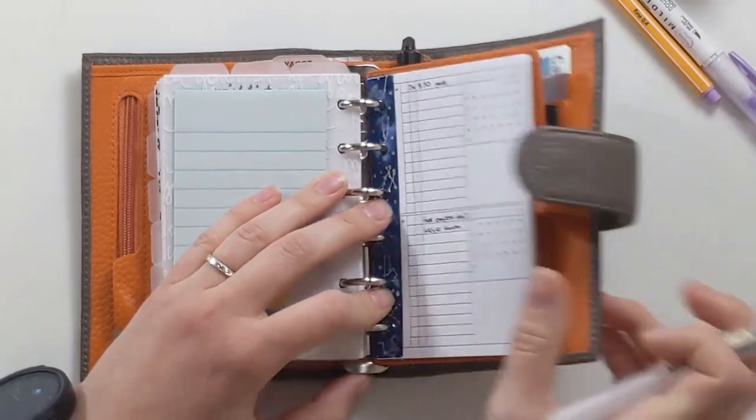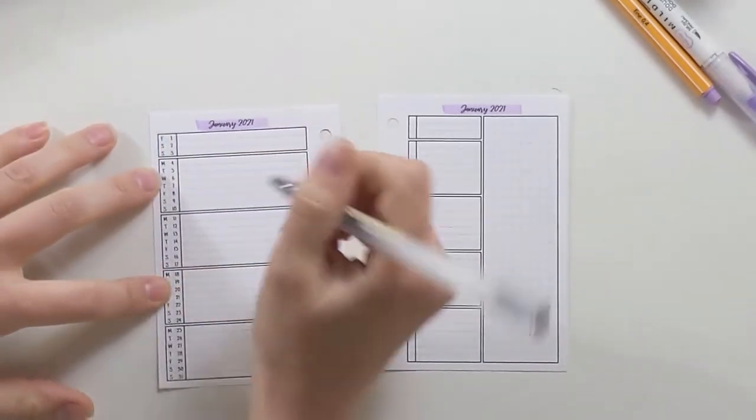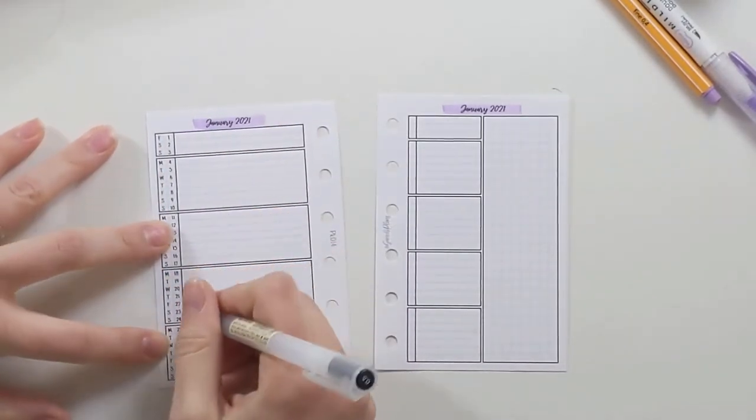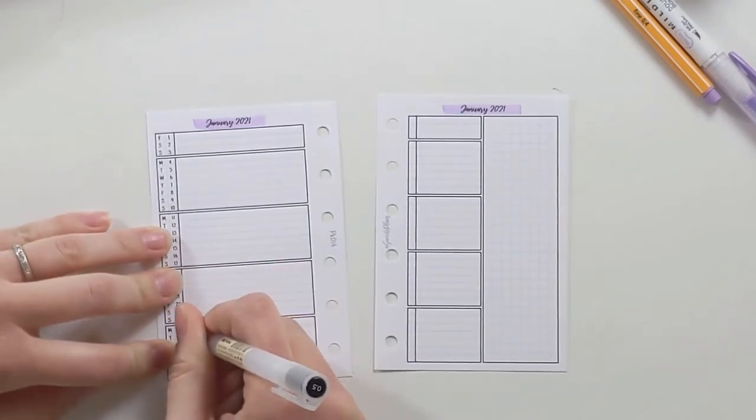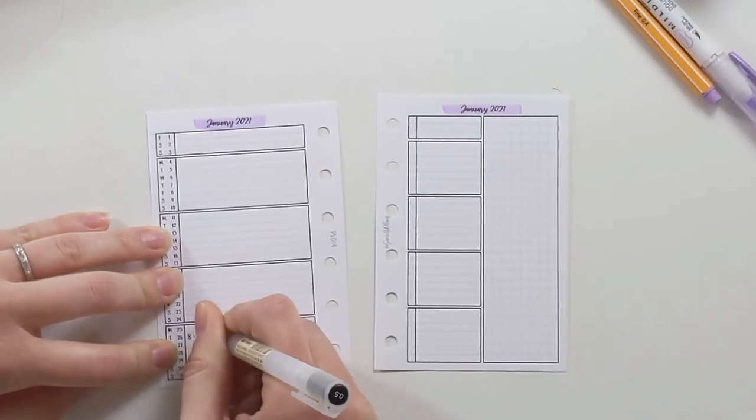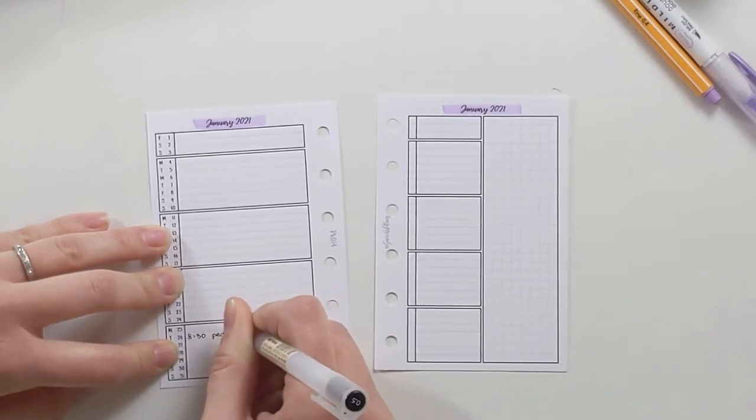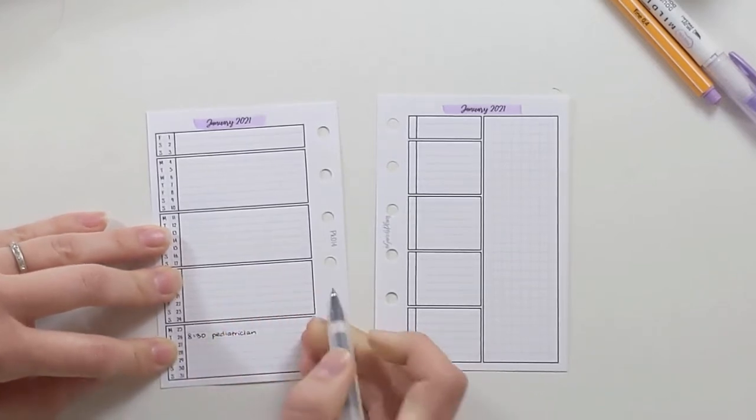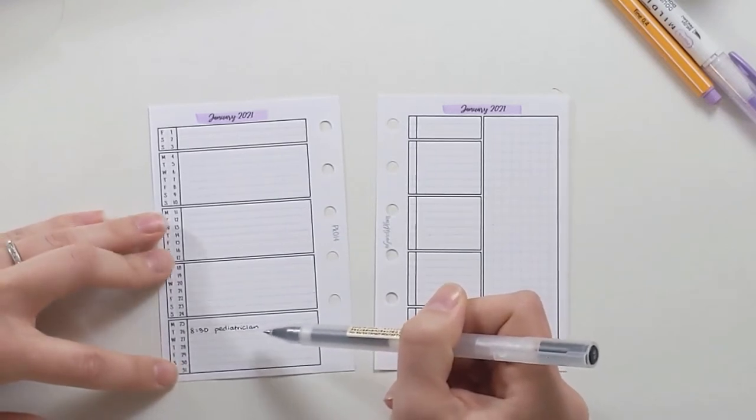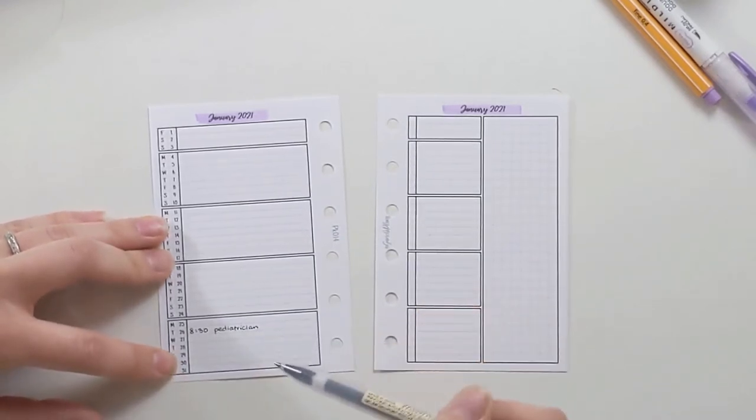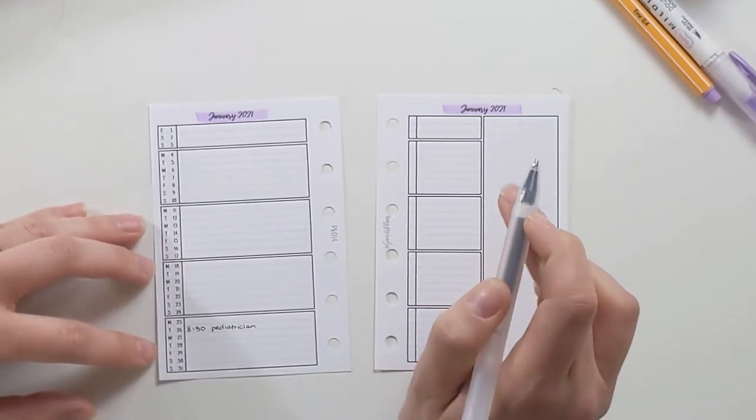The only thing on here is a doctor's appointment. So I'm going to have that over on this side as a date specific event type thing. 8:30. I feel like at some point, hopefully I'll have enough kids that I'll have to put a name there and remember whose pediatrician appointment it is, but that's for the baby. She'll be four months old, which is crazy.